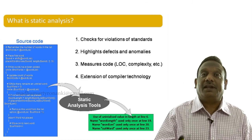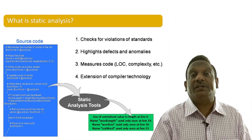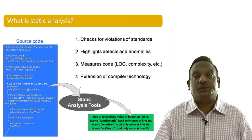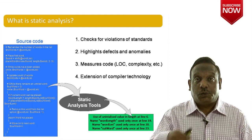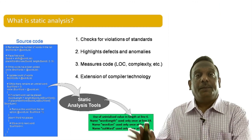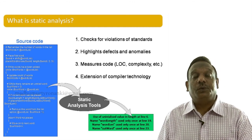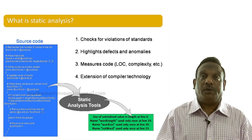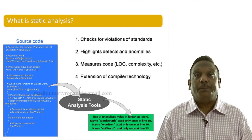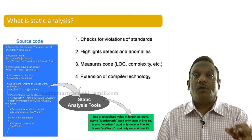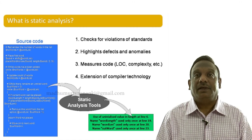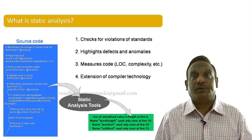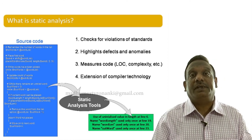What kind of problems do static analysis tools find? They can check for violations of coding standards — variable naming conventions, style-related issues. Automated static analyzers can easily find these and make a report. They can also highlight defects and anomalies related to data flow and control flow. We will talk about data flow analysis and control flow analysis in the next lessons. They can find both defects and anomalies — sometimes anomalies may not cause failures but can create erroneous results.